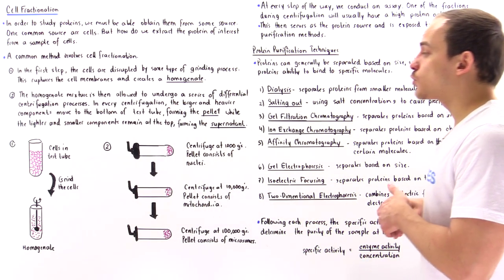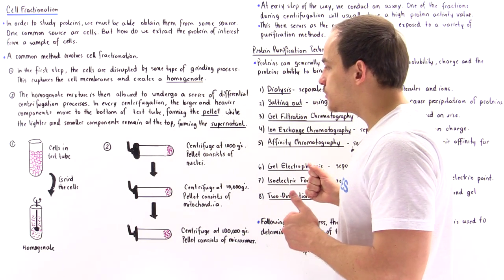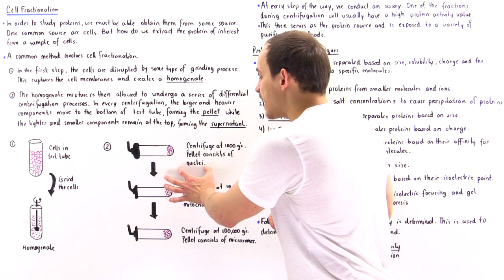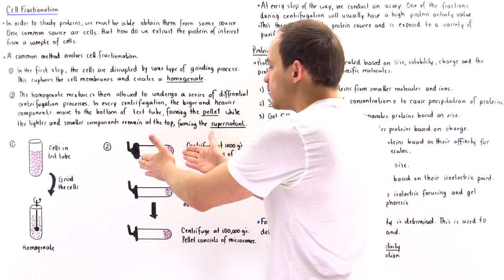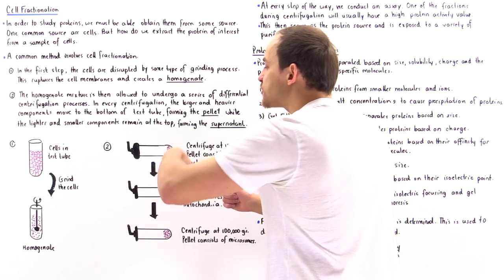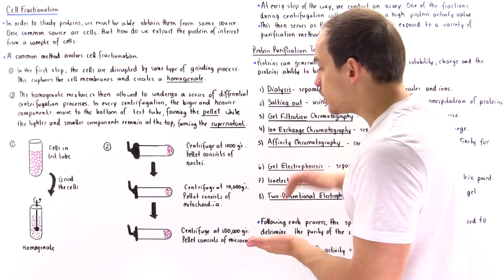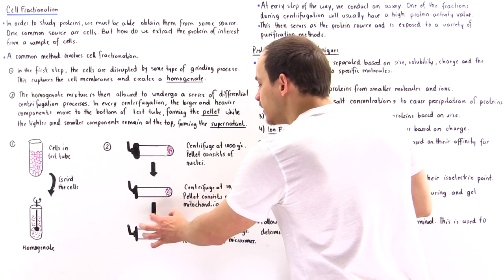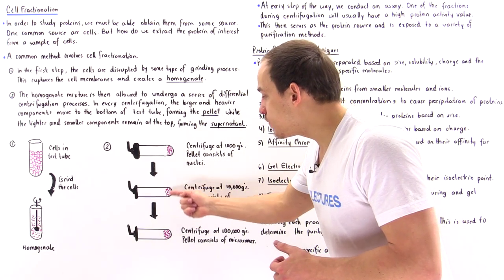1000 g's means the molecules inside our test tube experience an acceleration 1000 times as high as gravitational acceleration. In the first step, because we're only using 1000 g's, we separate things like the nuclei of the cells. So in the pellet we have the nuclei, and in the supernatant we have everything else. We then remove the pellet, take the supernatant, and expose it to another centrifugation process, now increasing the acceleration to 10,000 g's, forming a pellet that contains our mitochondria, which are smaller than nuclei.